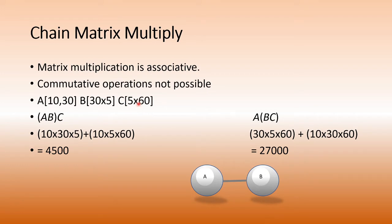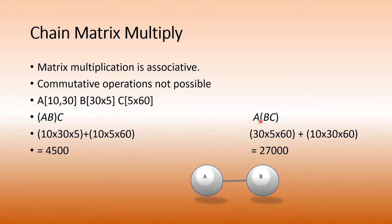The matrix multiplication problem is defined as follows: we have a chain of matrices — in this simple example, A, B, and C, three matrices. If we want to multiply these three matrices, we can use the associative multiplication rule: multiply A and B first, then multiply by C, or multiply B and C first and then multiply by A.